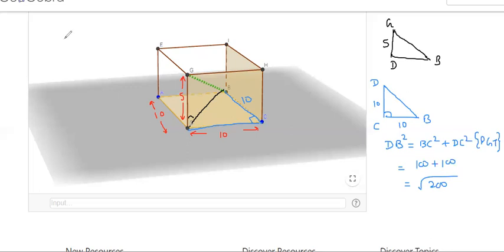What is under root of 200 value? Can I write it like this: 2 into 10 into 10?